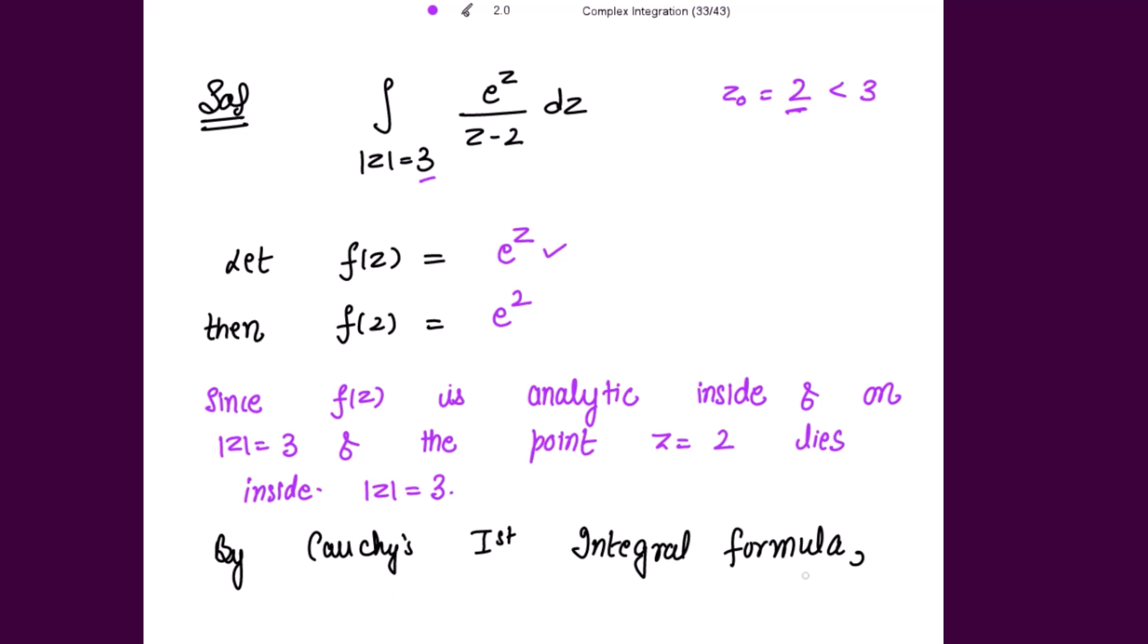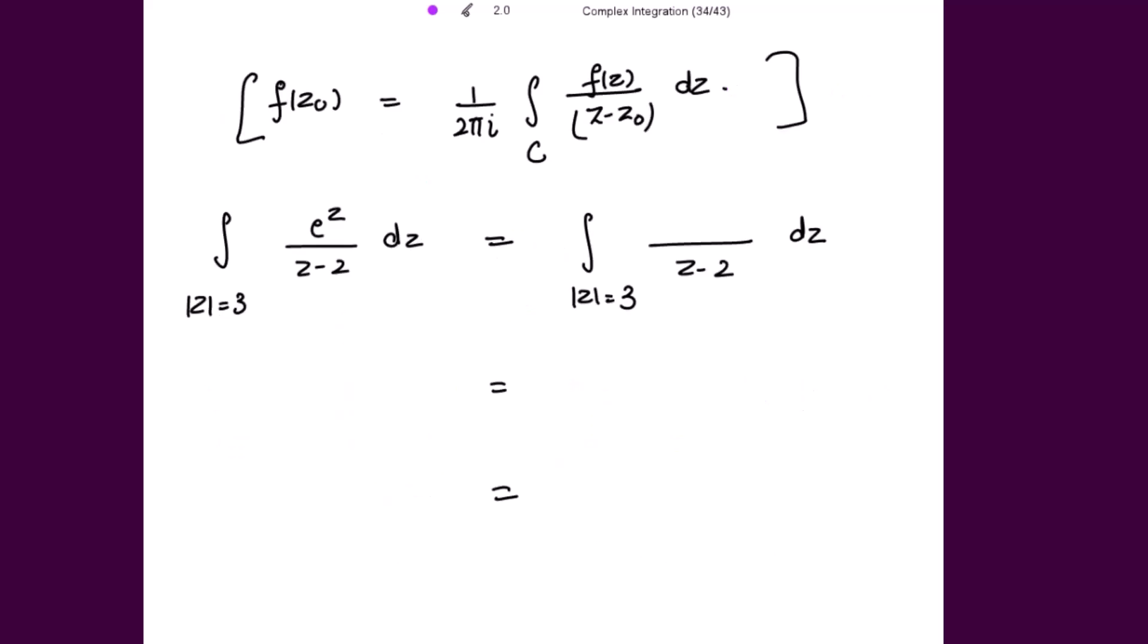So by Cauchy's first integral formula, that is f(z_0) equals 1 over 2πi times the integral of f(z) over z minus z_0 dz.